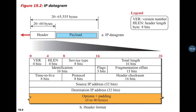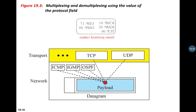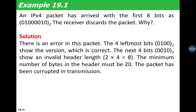Multiplexing and demultiplexing use the value of the Protocol field. A datagram can carry packets from TCP, ICMP, IGMP, or other protocols. The protocol field values are: 1 for ICMP, 2 for IGMP, 6 for TCP, 17 for UDP, and 89 for OSPF (a routing protocol we will study later). Multiplexing takes place at the transmitter side and demultiplexing at the receiver side.